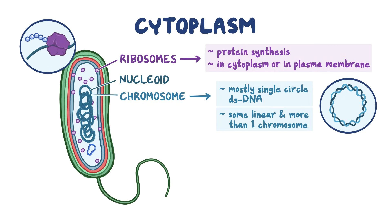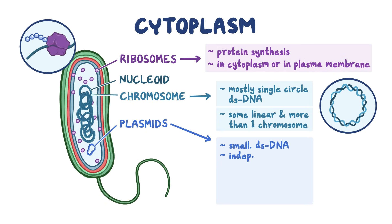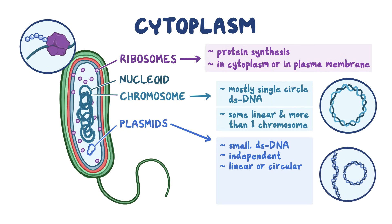In addition to the genetic material contained within the nucleoid, many bacteria contain extra-chromosomal DNA molecules called plasmids. These plasmids are small, double-stranded DNA molecules that can exist independently of the chromosome, and they can be circular or linear. Plasmids have relatively few genes, and their genetic information is not essential to the bacterium — cells that lack them usually function normally. However, plasmids often contain genes that confer a selective advantage, such as resistance to antibiotics.